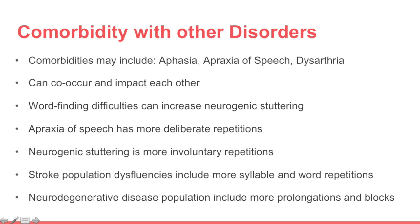Subtypes of neurogenic stuttering include dysarthric disfluency, which involves frequent prolongations, rapid sound-syllable-word repetitions, and blocking; apraxic disfluency, which involves repetitions of initial segments of words with groping for appropriate words or targets; and palilalia, which includes word or phrase repetitions without sound or syllable repetitions, where speech may become increasingly rapid and progressively less intelligible.